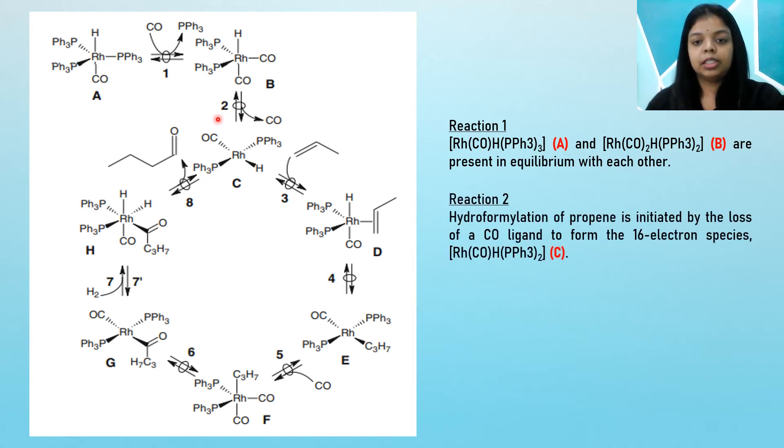Moving on to reaction two, we have the hydroformylation of propene which is initiated by the loss of a carbonyl ligand. A carbonyl group is lost to form the 16-electron species complex C.